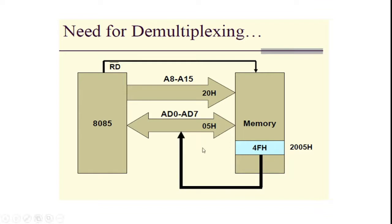In the schematic representation of the 8085, we can see the RD bar signal, which is a control signal — we will discuss it later. A15 to A8 are the higher order address bus, and AD0 to AD7 is the multiplexed address data bus.